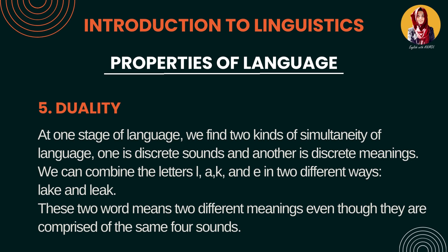Duality means dualness or polarity. Yeh language ki woh property hai jis ke andar hum log different letters ko rearrange karte hue dual meanings nikalte hain, dual words banaate hain. For example, we have letters L, A, K, and E. We rearrange these letters to create two different words: our first word is LAKE, and the second one is LEAK. So these letters perform double functions — we are getting two different meanings just by rearranging the letters.